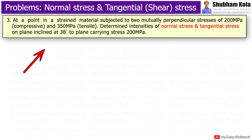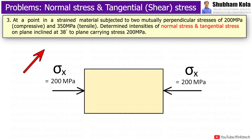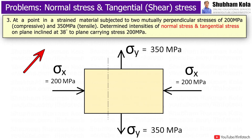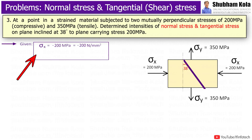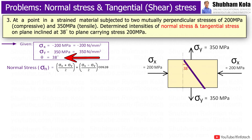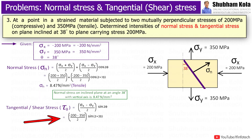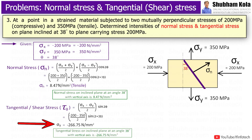For the next problem: at a point in a strained material subjected to two mutually perpendicular stresses of 200 MPa compressive and 350 MPa tensile, determine the intensities of normal stress and tangential stress on a plane inclined at 38 degrees to the plane carrying 200 MPa. Given data: sigma_x = −200 N/m² (negative sign indicates compressive) and sigma_y = 350 N/m² (tensile). Taking theta = 38 degrees and substituting sigma_x and sigma_y into the formula, normal stress on the inclined plane is 8.47 N/m² and tangential shear stress is −266.75 N/m².